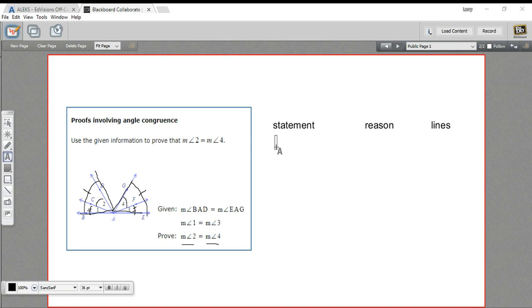The place that I would start here is with the given information, that first given information. So we'll say the measure of ∠BAD equals the measure of ∠EAG and the reason there is that it's given.